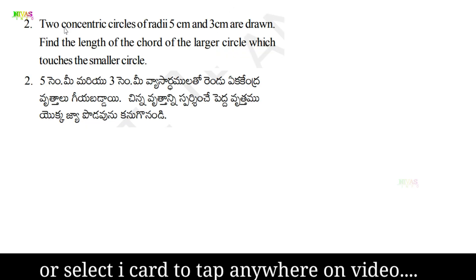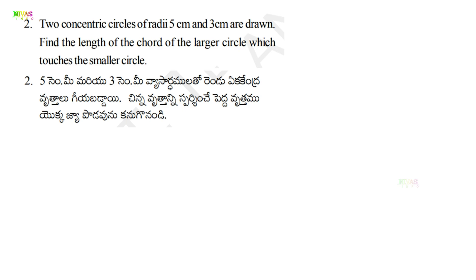Question number 2: Two concentric circles of radii 5 centimeters and 3 centimeters are drawn. Find the length of the chord of the larger circle which touches the smaller circle.